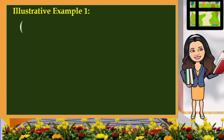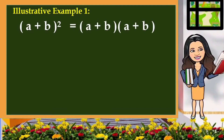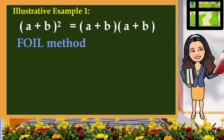Given the expression, the square of the quantity a plus b, if we are going to rewrite this in expanded form, that is the same as the quantity a plus b multiplied by the quantity a plus b. This is a product of two binomials. Observe their first terms — they are the same. Observe their last terms — they are also the same. To find the product of these two binomials, we are going to use the so-called FOIL method.